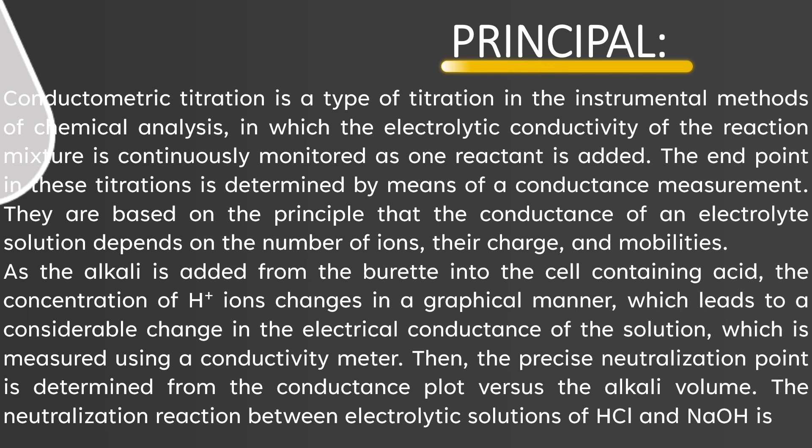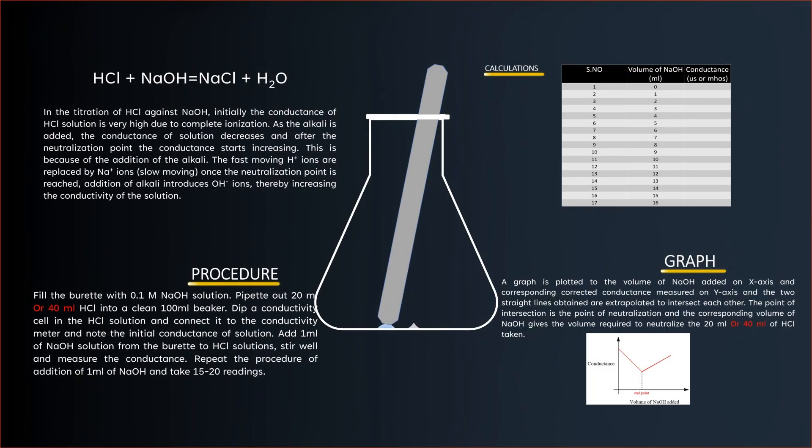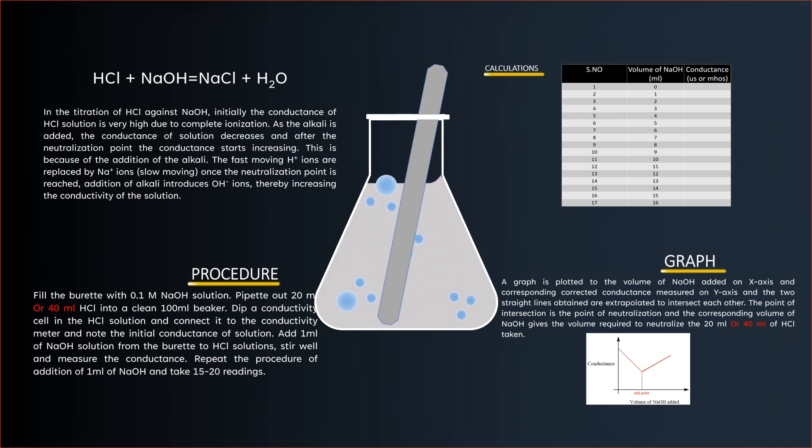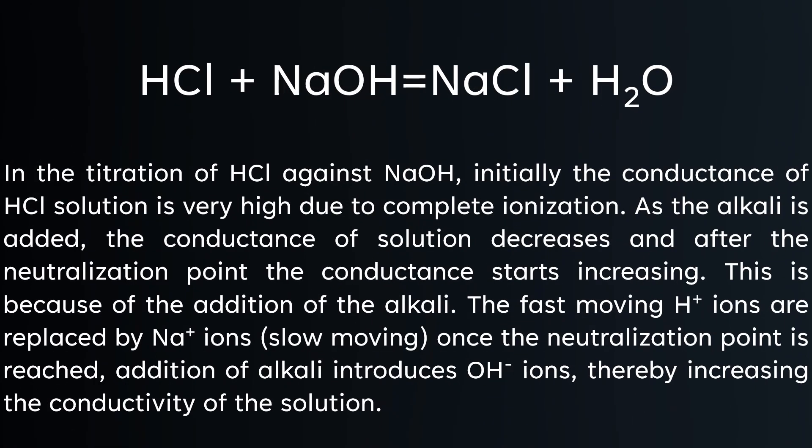The neutralization reaction between electrolytic solution of HCl and NaOH solution is: HCl + NaOH → NaCl + H₂O. In this titration of HCl against NaOH, initially the conductance of HCl solution is very high due to complete ionization. As the alkali is added, the conductance of the solution decreases, and after the neutralization point, the conductance starts increasing.